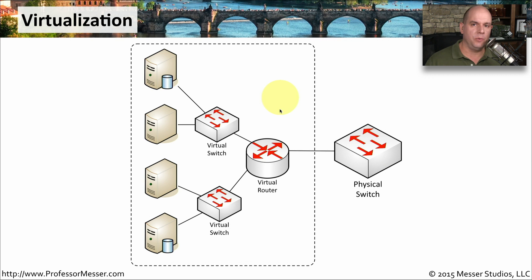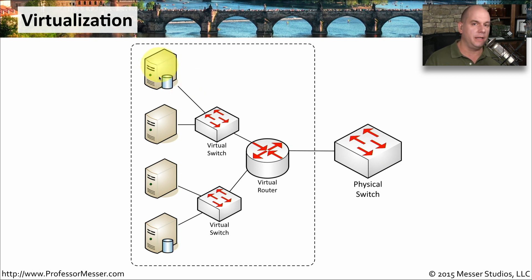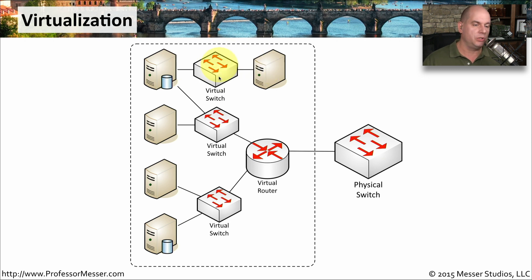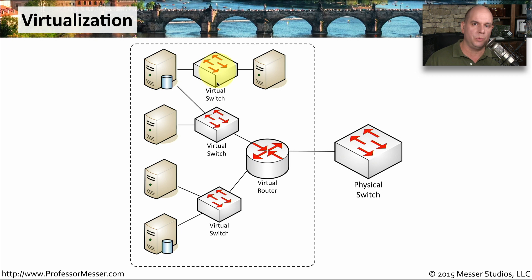Let's see how flexible networking works in a virtual environment. Let's say we have a server at the top, and we'd like to create a virtual environment that is private just for this server. We can go into our virtual environment and add a virtual switch, then connect one other server to it as well. Notice that server is not connected to any other devices on the network — we've made both devices local to each other simply by configuring a virtual switch. All of this is done in software with a couple of clicks.